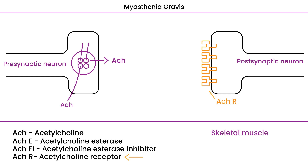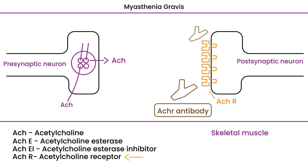Unfortunately, in myasthenia gravis, you have an autoimmune attack. What happens is you get acetylcholine receptor antibodies that come and block the acetylcholine receptors. This acetylcholine receptor antibody prevents these acetylcholine molecules from binding. The area where all the action occurs is called the synaptic cleft.